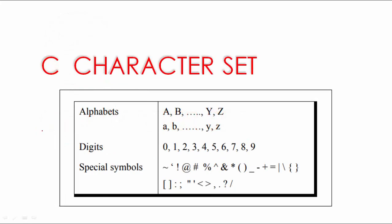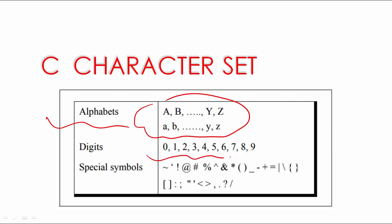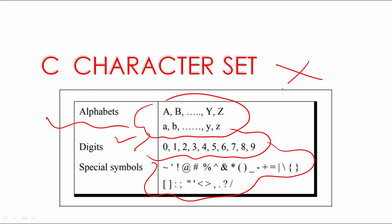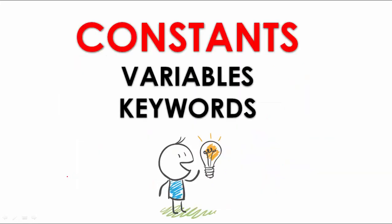These are the alphabets you can use in any C program, these are the digits possible to use in a C program, and these are the symbols. We cannot use anything except these characters in a C program. This is our basic C character set.